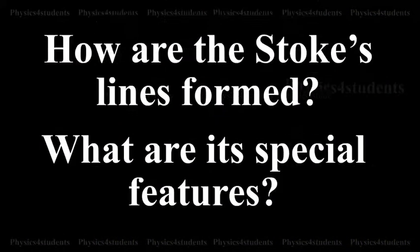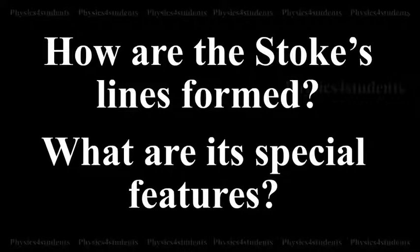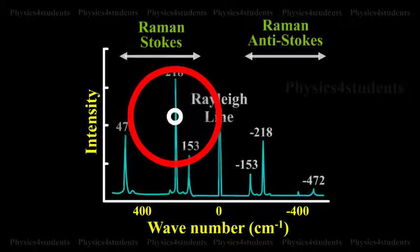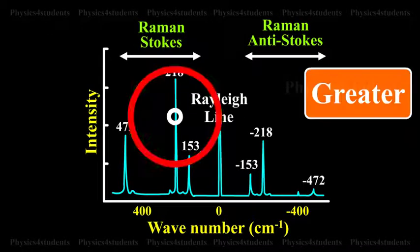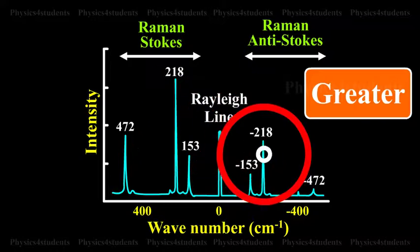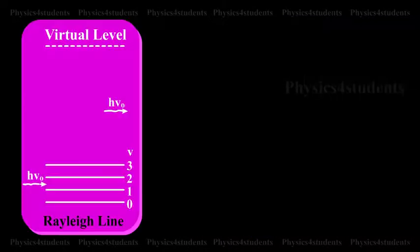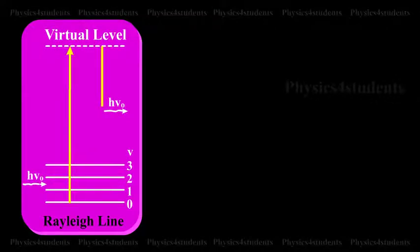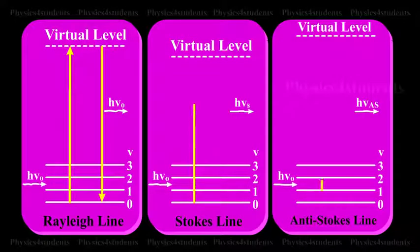How are the Stokes lines formed? What are its special features? The intensity of the Stokes line is always greater than the corresponding anti-Stokes line. The different processes giving rise to Rayleigh, Stokes, and anti-Stokes lines are shown in the animation.